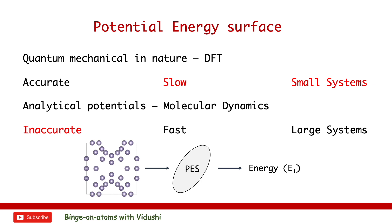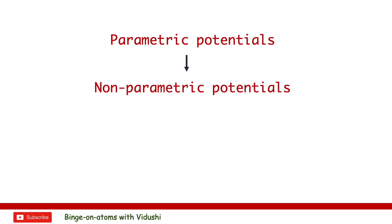Another set of potentials are developed by introducing physical approximations. These analytical potentials provide a much simpler direct relation between the structure and its energy and can be calculated much faster. Of course, this compromises efficiency and accuracy. These potentials are usually referred to as parametric because they have been developed with a fixed number of physical terms and approximations. You can learn about them in detail elsewhere.